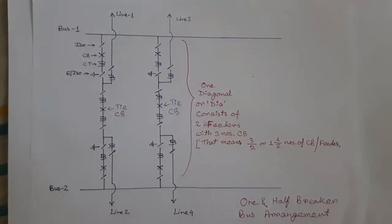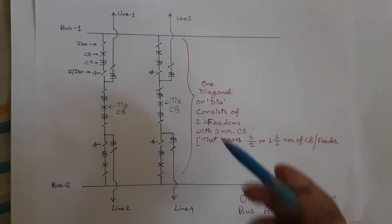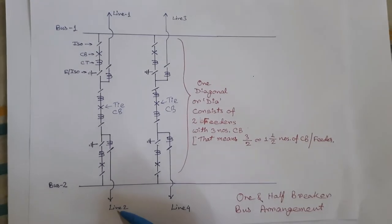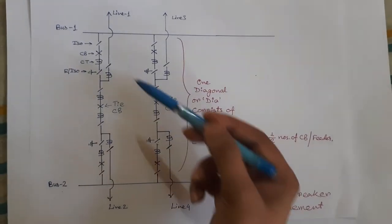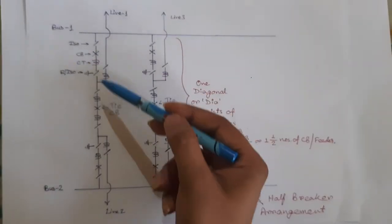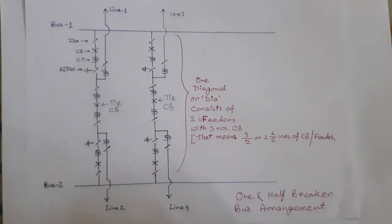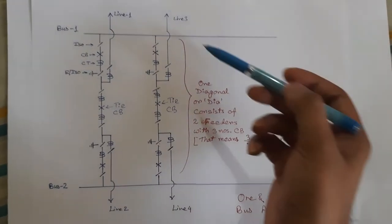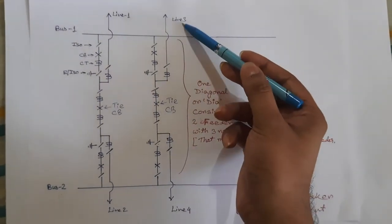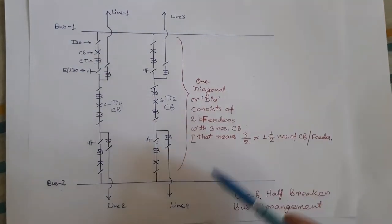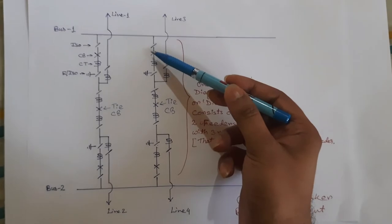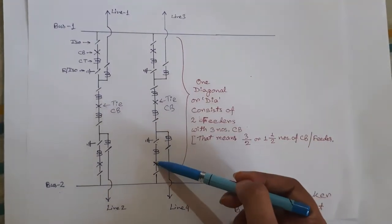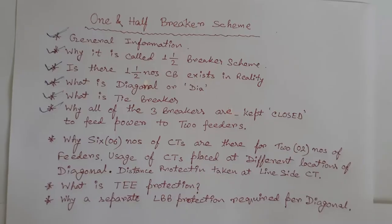One point to be noted: to feed line 1 and line 2, all three breakers will be closed. Similarly, to feed line 3 and line 4, all three breakers will be closed simultaneously.